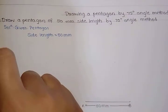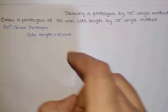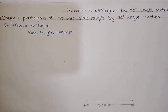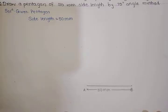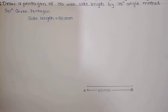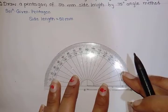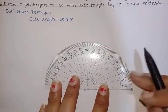Therefore in solution we will write: given pentagon, side length of 50mm. Now we will draw a length AB of 50mm distance. After that, taking angle of 72 degrees, measure from point A as